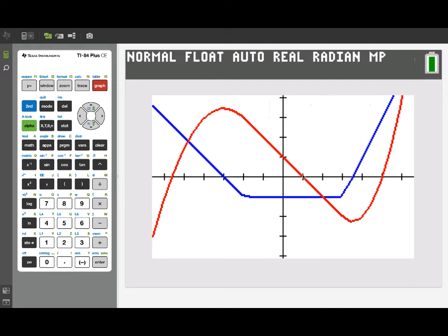Over here where we said there should be a relative minimum, sure enough we do have that. And here where we said the slope should be constant negative 1 matches up. And here where we said we should have a location for relative maximum, sure enough we do.